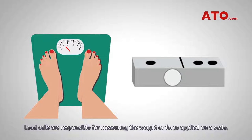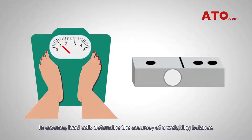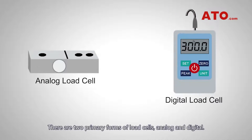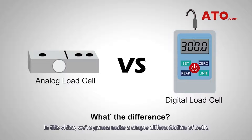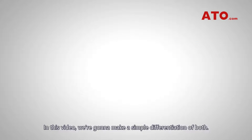Load cells are responsible for measuring the weight or force applied on the scale. In essence, load cells determine the accuracy of a weighing balance. There are two primary forms of load cells: analog and digital. In this video, we are going to make a simple differentiation of both.